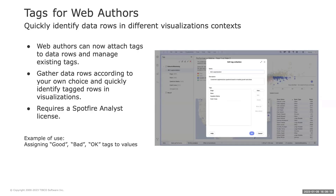With Spotfire 12.2, we are bringing the tags feature to web authors. Tags is a feature we've had in the desktop clients for a long time. It enables analysts and application developers to gather data according to their own choice and quickly identify tagged rows across different visualization contexts — for example, gathering the top 100 values, or assigning tags like 'good', 'bad', or 'okay'. Web authors with a Spotfire analyst license can now attach and manage tags from the web client.